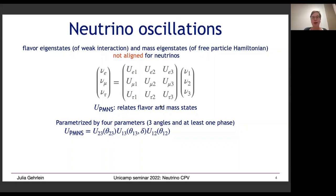The PMNS matrix can be parametrized by three angles and one phase, written as a series of rotations: around the 2-3 axis, the 1-3 axis, and the 1-2 axis. The CP-violating phase delta is placed in the 1-3 sector, while the three rotation angles are called theta_23, theta_13, and theta_12.